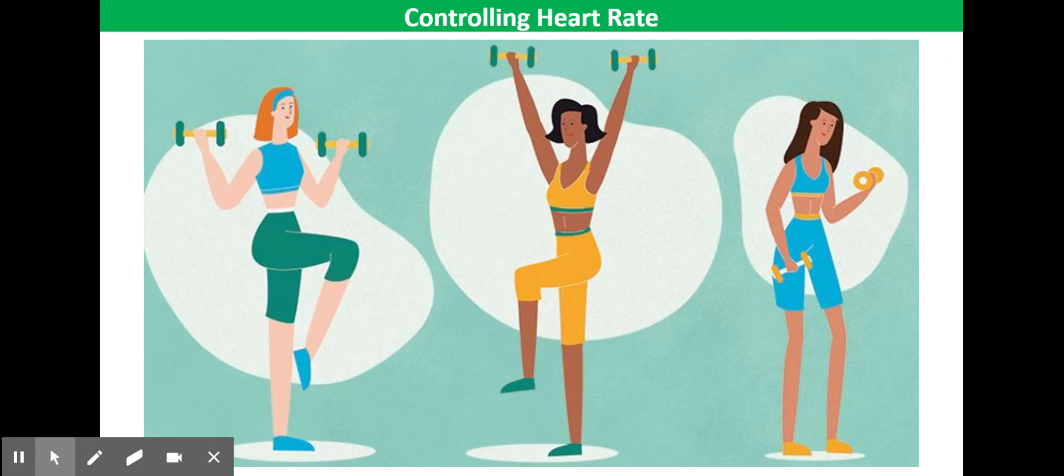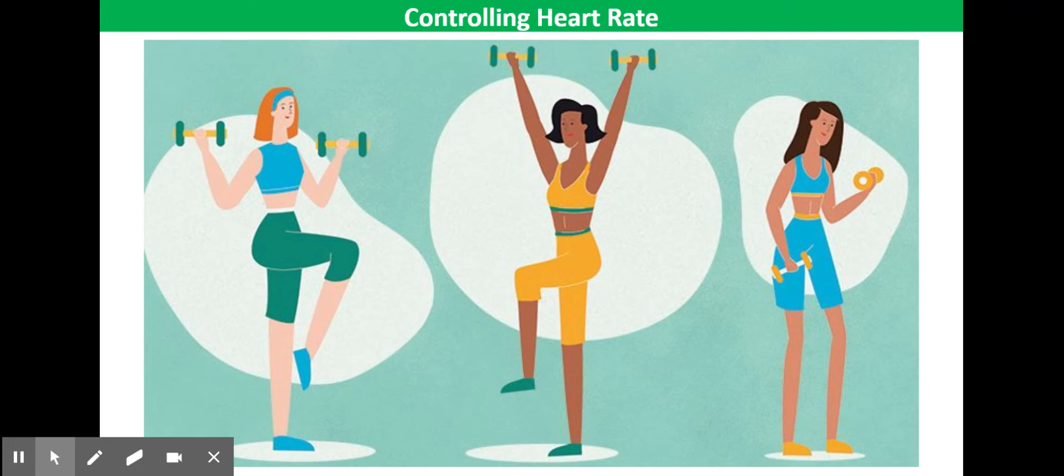So in terms of controlling activity, the heart action can be modified in a few different ways. Firstly, you can either raise or lower the heart rate—that's the number of beats per minute. Secondly, you could alter the force of the contractions, so that's the contractions of the ventricle walls. Or thirdly, you could alter the stroke volume, the volume of blood being pumped in every single beat.